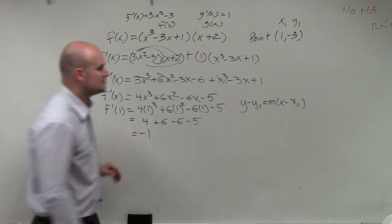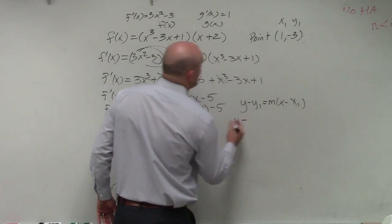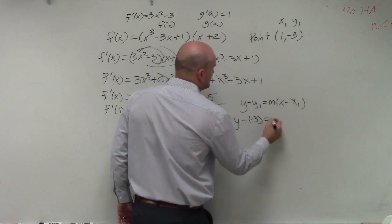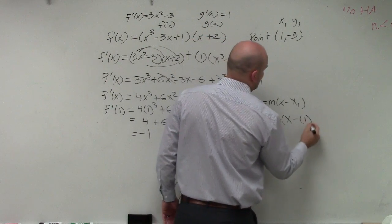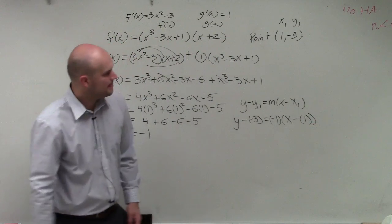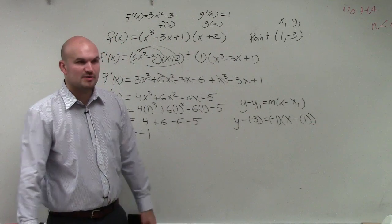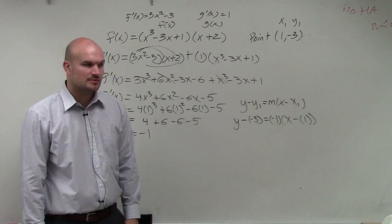Negative 1. So just plug in your information: y minus y1, which is negative 3, equals negative 1 times x minus x1, or x1 is right there. And that is perfectly fine. That is an equation of a line.